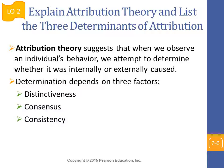Attribution theory helps us better understand the way people judge differently in daily life. It suggests that when we observe an individual's behavior, we attempt to determine whether it was internally or externally caused. Such determination depends on three factors: distinctiveness, consensus, and consistency.